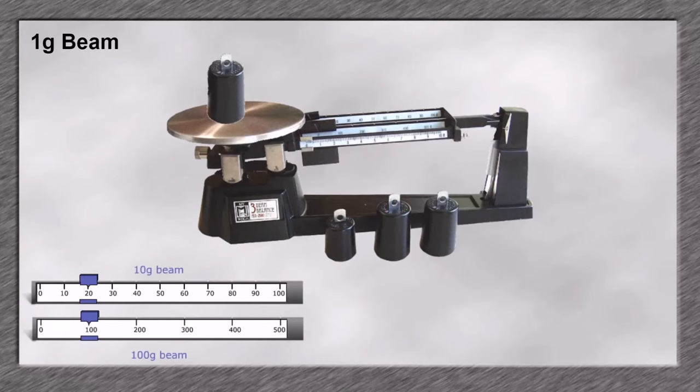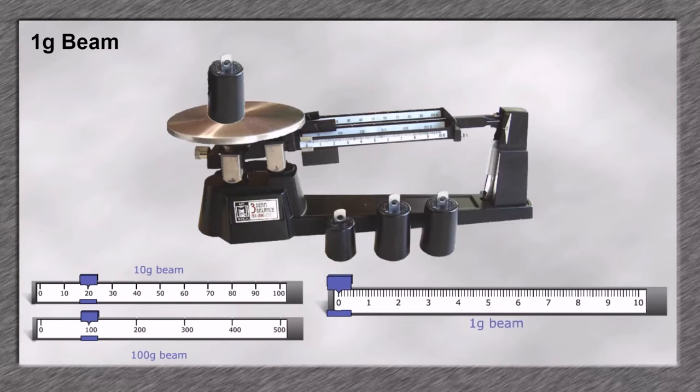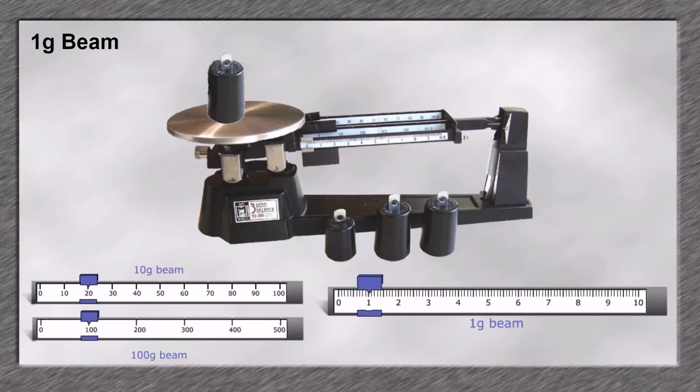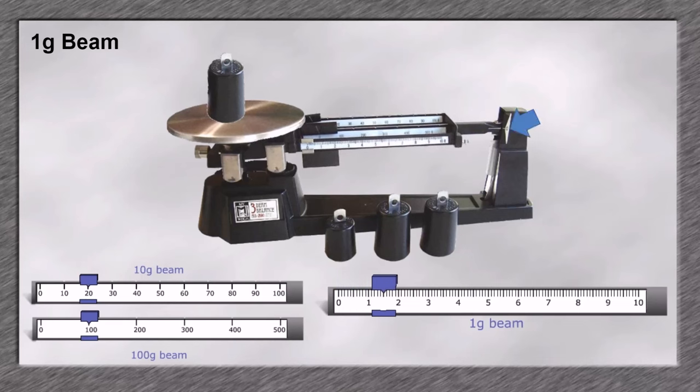After you have determined what weight to add from the 10 gram beam, go to the 1 gram beam to fine tune your measurement. Select each half gram increment to narrow your final measurement. When the scale is level at zero, you've found the final measurement.